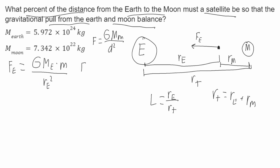The force from the Moon I'll call FM. FM will be equal to G times the mass of the Moon, times the mass of the satellite, all over RM squared.